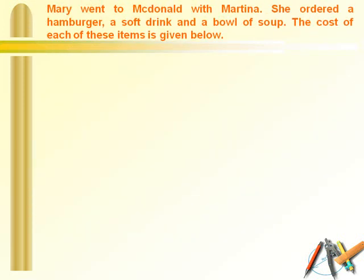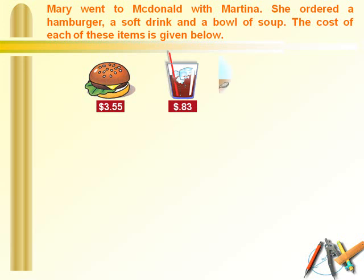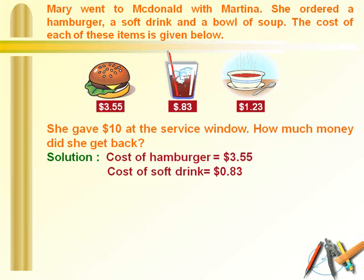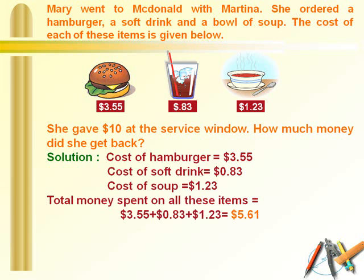Now let's see this example. Mary went to McDonald's with her sister Martina. She ordered a hamburger, soft drink, and soup. The hamburger cost 3.55 dollars, the soft drink cost 0.83 dollars, and the bowl of soup cost 1.23 dollars. She gave 10 dollars at the service window. First, let's add the cost of each item: the hamburger, soft drink, and bowl of soup. When you add all of these, you get 5.61 dollars.